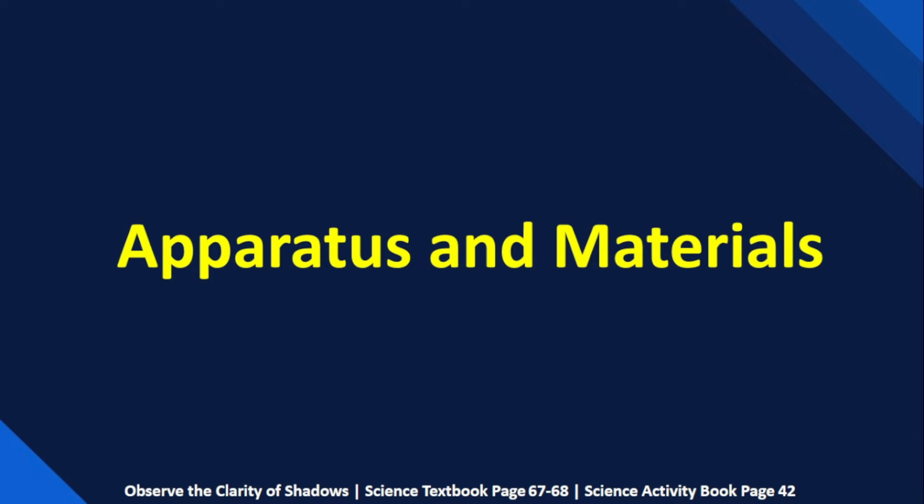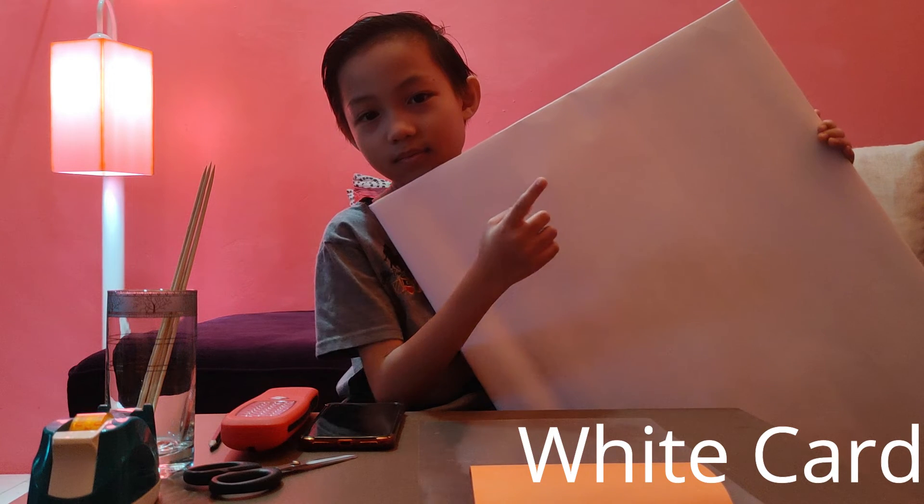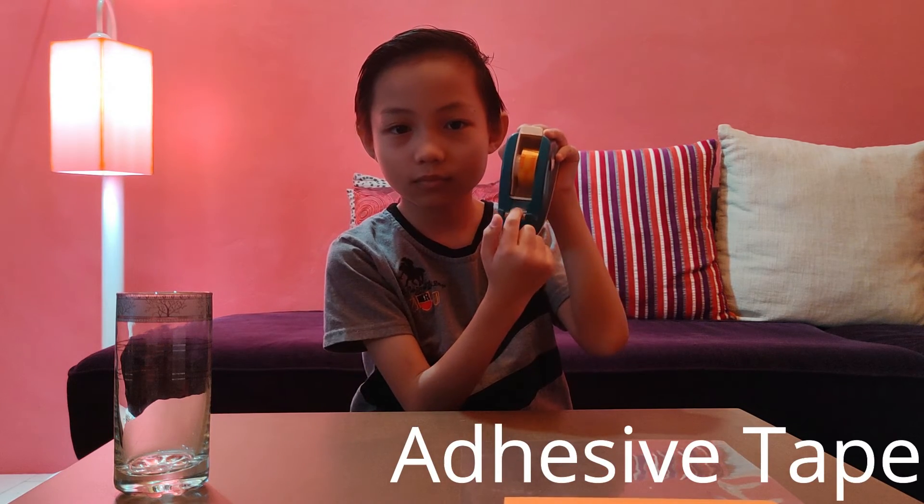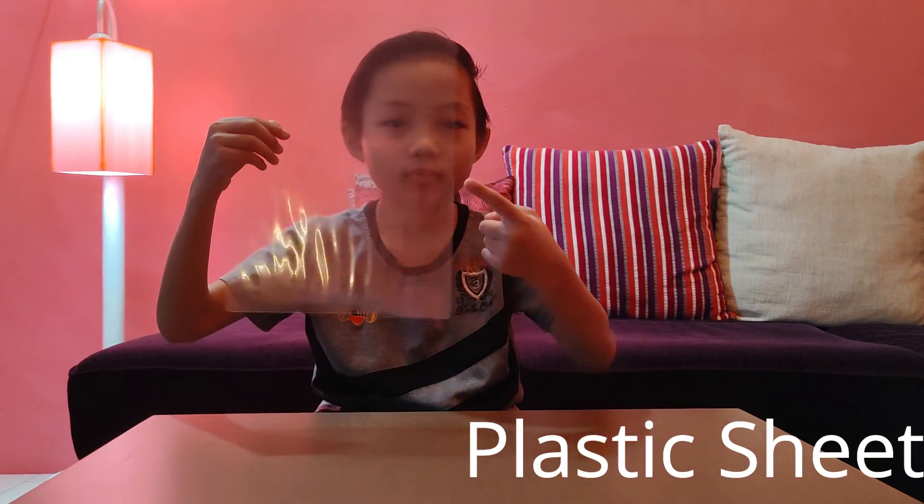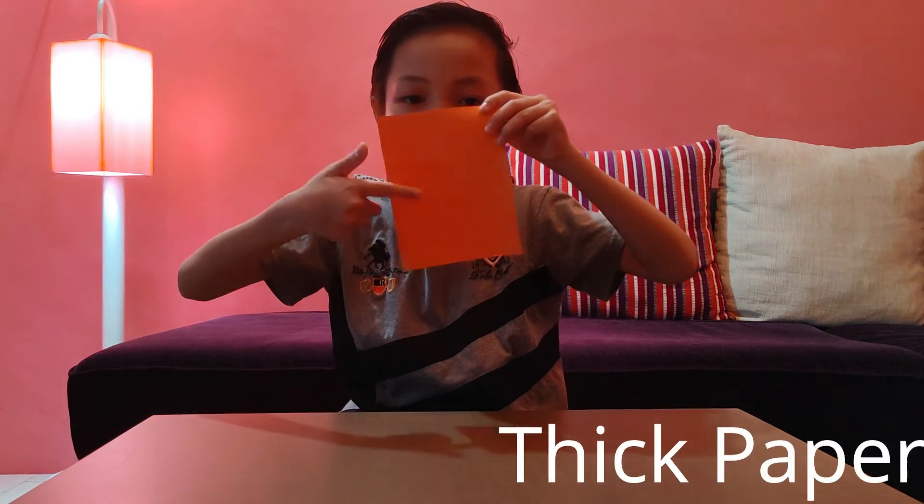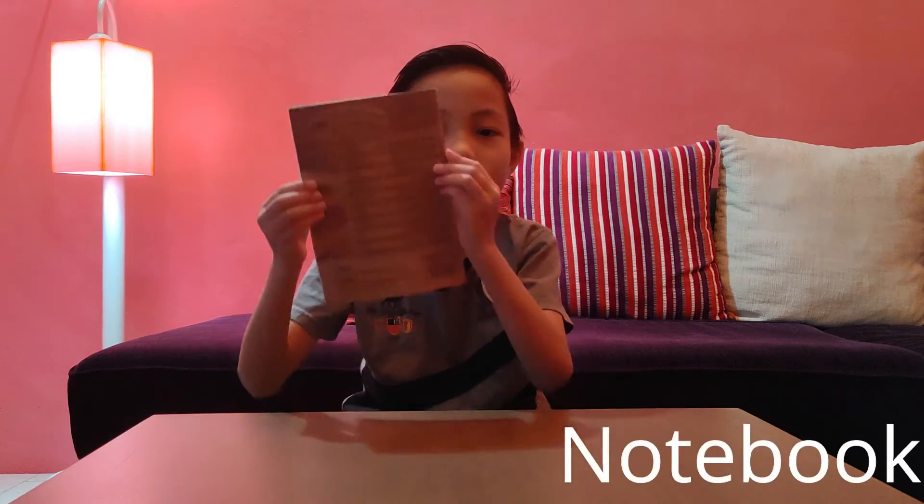Let us look at the apparatus and materials for this investigation: white card or white board, a torch or flashlight from your smartphone app, a pencil, skewer, a pair of scissors, adhesive tape, plastic sheet or transparency, dressing paper or tissue paper, stick paper or manila card, a notebook, glass bottle or drinking glass, and a plastic ruler.